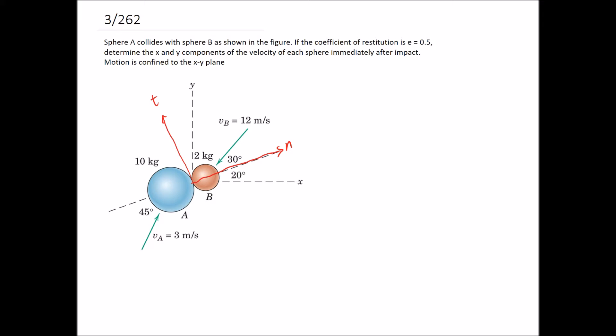Since it's an impact, we'll use the velocity in the n and t directions separately when substituting into our momentum equations. Starting with ball A: the normal component is in line with the n-axis pointing in the positive n direction, so it's positive — 3 cos 45. For the tangential component, it's the sine component of that vector, and it's also pointing in the positive t direction: 3 sin 45.